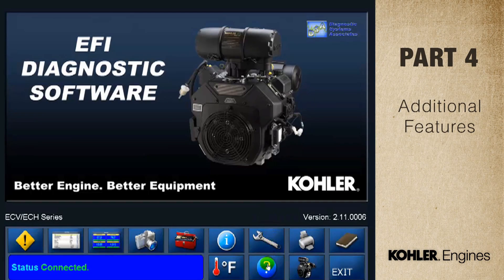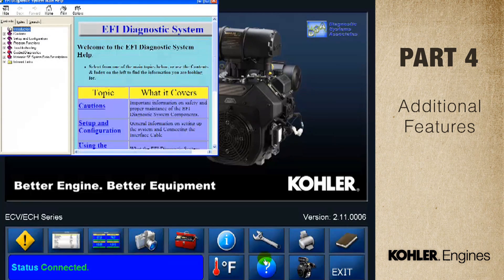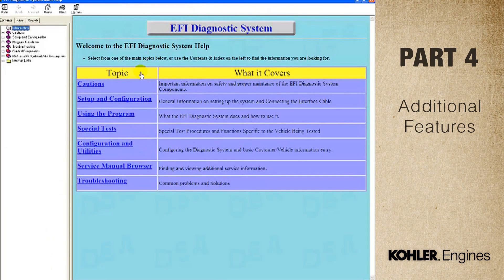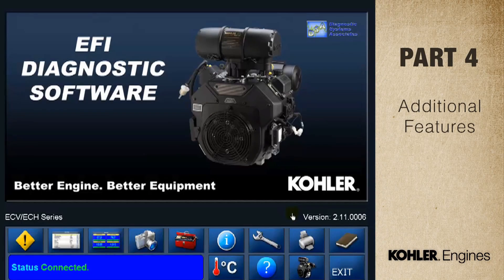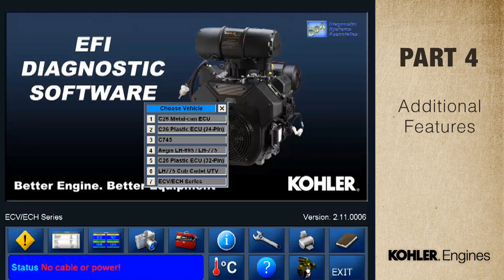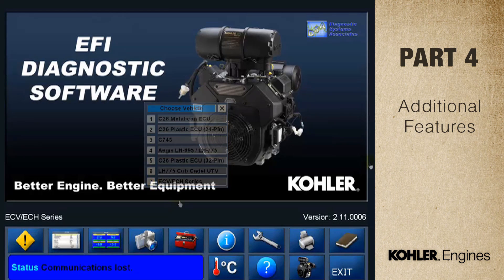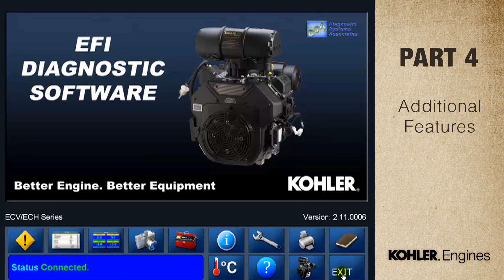This is the system help button — it contains the most complete and updated information on the EFI diagnostic software. You can search by topic or use the search bar. System help is automatically updated whenever there are software updates. The engine vehicle selection button opens the list of engines you can diagnose with this software. Remember, choose the proper engine to be sure the proper diagnostic information is displayed. The last button is the exit button — it closes the diagnostic system and shuts down communication to the vehicle.